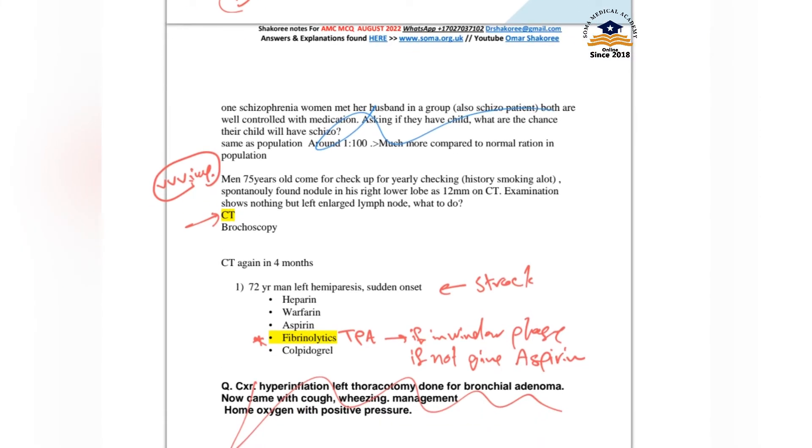A 75-year-old man came for yearly checkup, history of smoking a lot. He was found to have a nodule in his right lower lobe on CT of the chest. Examination shows nothing but left enlarged lymph node. What to do? CT.